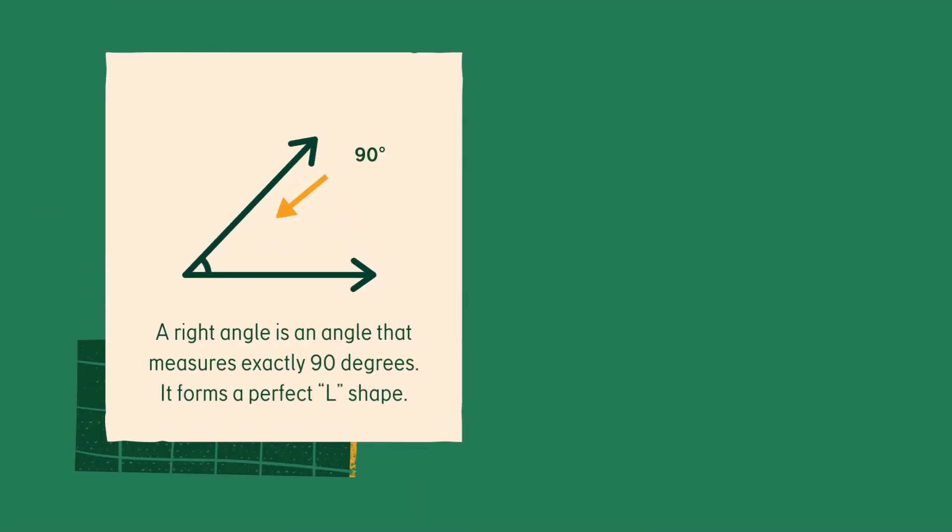A right angle is an angle that measures exactly 90 degrees. It forms a perfect L shape.